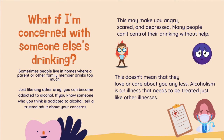What if you're concerned about someone else's drinking? Sometimes people live in homes where a parent or other family member drinks too much alcohol. This may make you angry, scared, sad, and depressed. Many people can't control their drinking without help — just like any other drug, you can become addicted to alcohol. If you know someone who is addicted, tell a trusted adult about your concerns so that person can get help. Alcoholism is an illness that needs to be treated just like any other illness. It doesn't mean that person loves you any less — they are sick and it may take a while to get better.